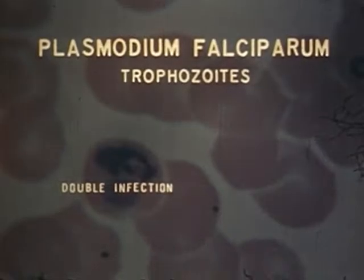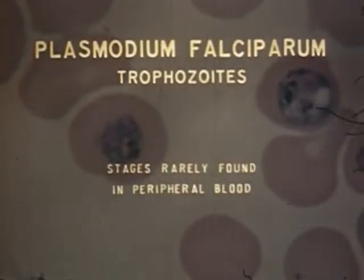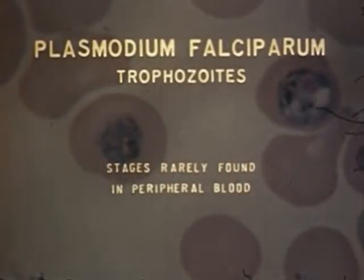This slide was especially selected in order to show other forms such as these developing trophozoites. Contrast the normal size of these red blood cells with the enlarged cells of the corresponding vivax forms.